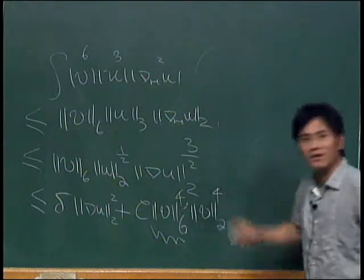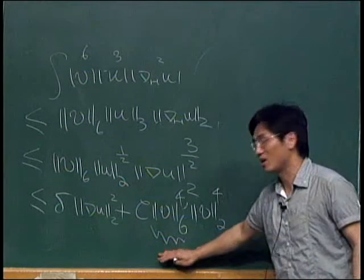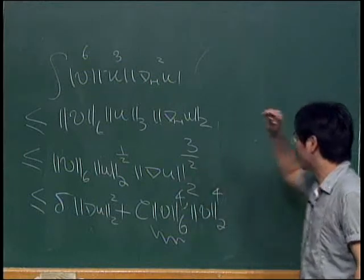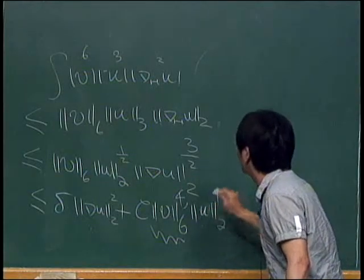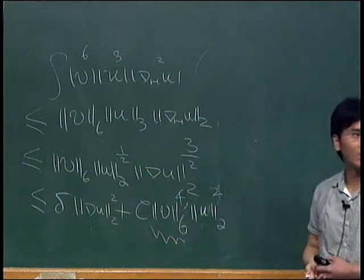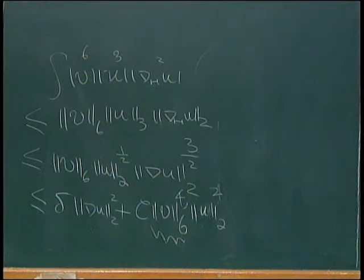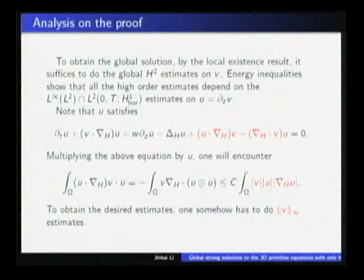We have this term. This term can be solved. For this one, we emphasize that for the full viscosity case, this can be obtained - L infinity, L6 bounded. So this is a good term. By Gronwall, this can be easy to obtain. This one, for this estimate, this is the key point in the paper by Cao and Titi. And for obtaining this estimate, it's technical. However, in our case, we only have horizontal viscosity. So this term cannot be done in the same way as here. And somehow, we have to do the L infinity estimate of V. Keep this in mind.